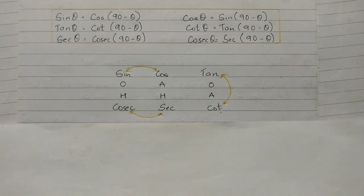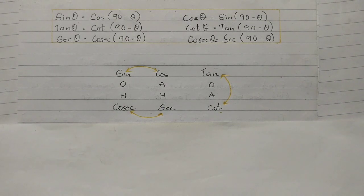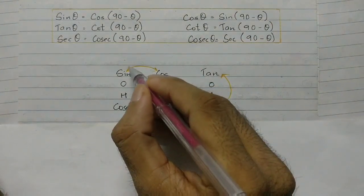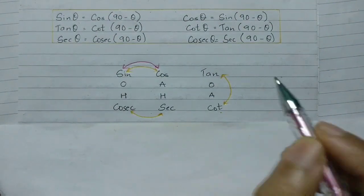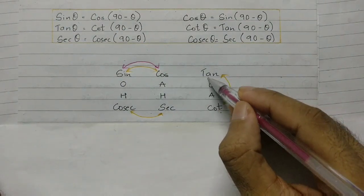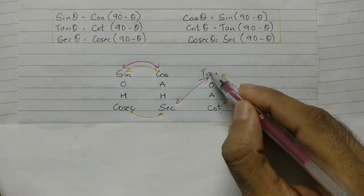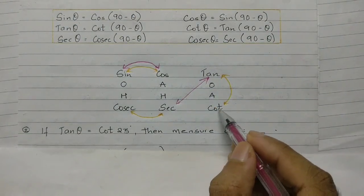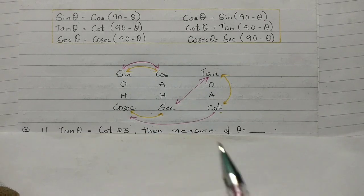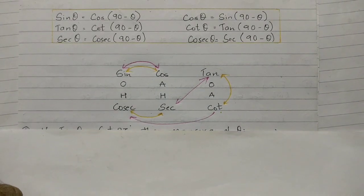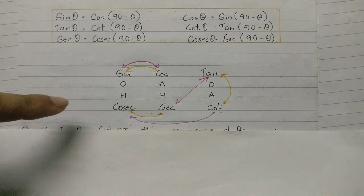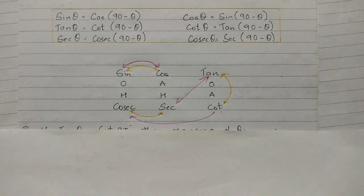If you've learnt the identities, good. If not, the arrows help you remember: sine squared theta plus cos squared theta equals 1, 1 plus tan squared theta equals sec squared theta, and 1 plus cot squared theta equals cosec squared theta. I'll link the videos in the description box — go ahead, watch them, and learn how to solve those identities.